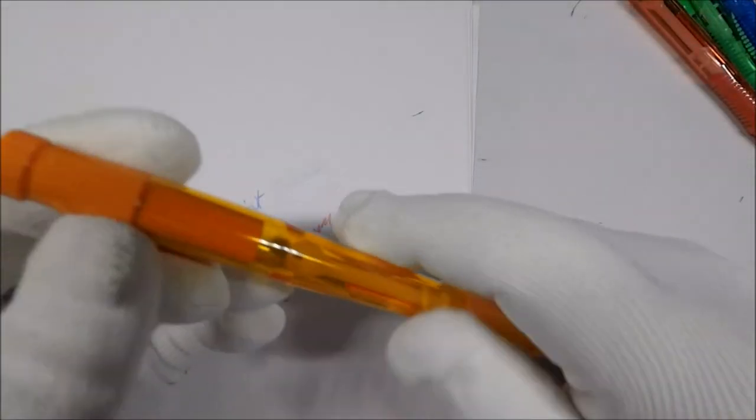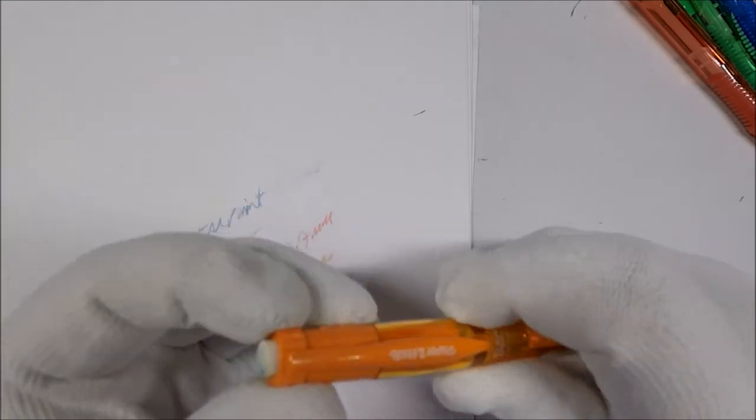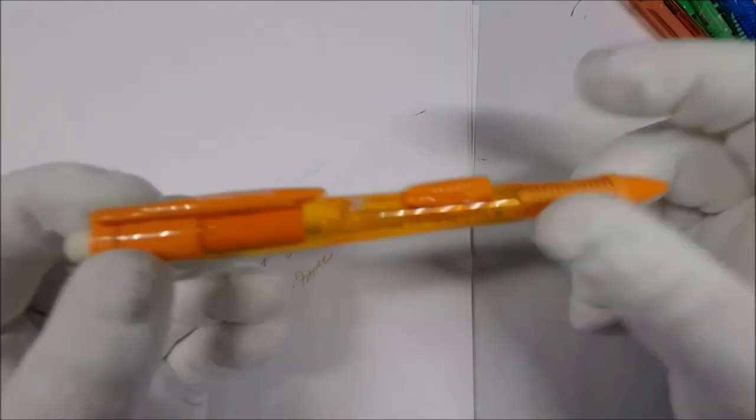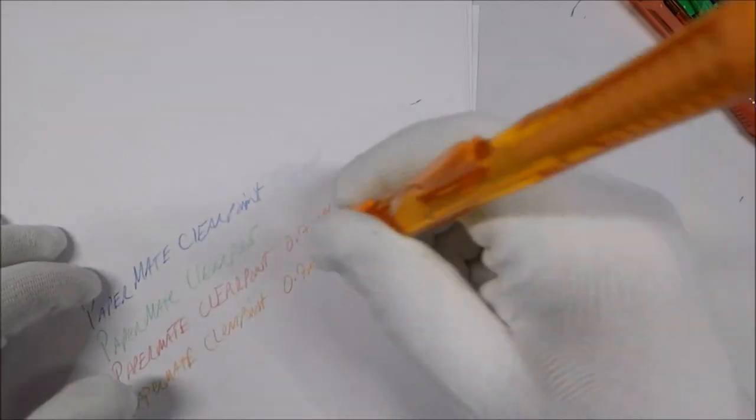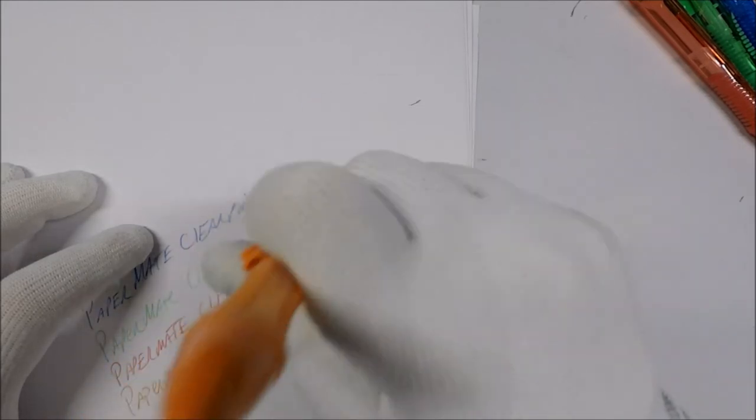You know, that's one thing I'm not enjoying about the twist up erasers. Unless I'm doing something wrong with it. When you twist it up and start erasing, it twists back down. You see? When I erase, it twists back down.